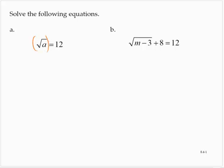And that's because of the relationship between radicals and exponents. The square root of a squared is a, and so a would equal 144.